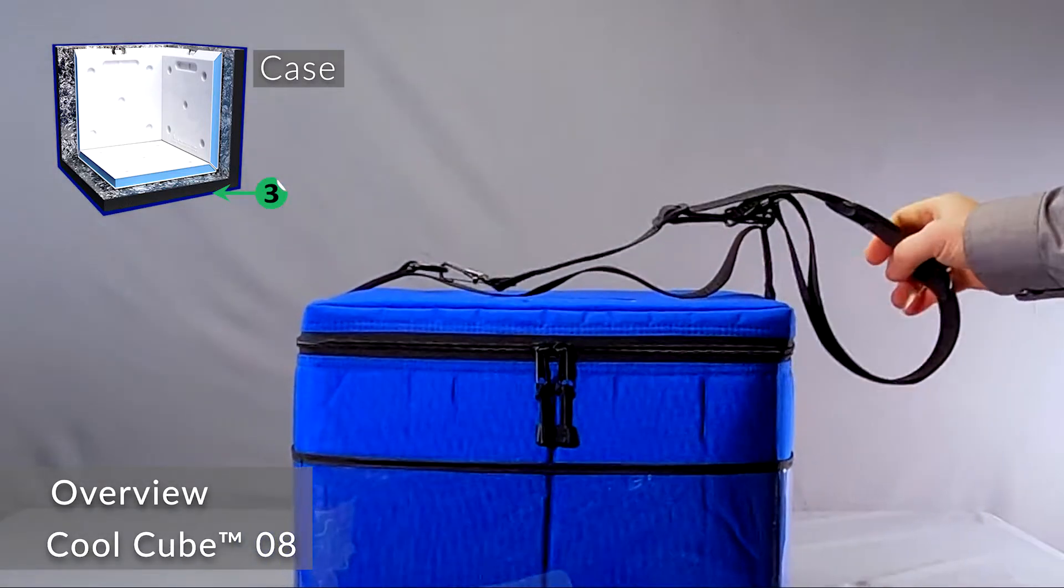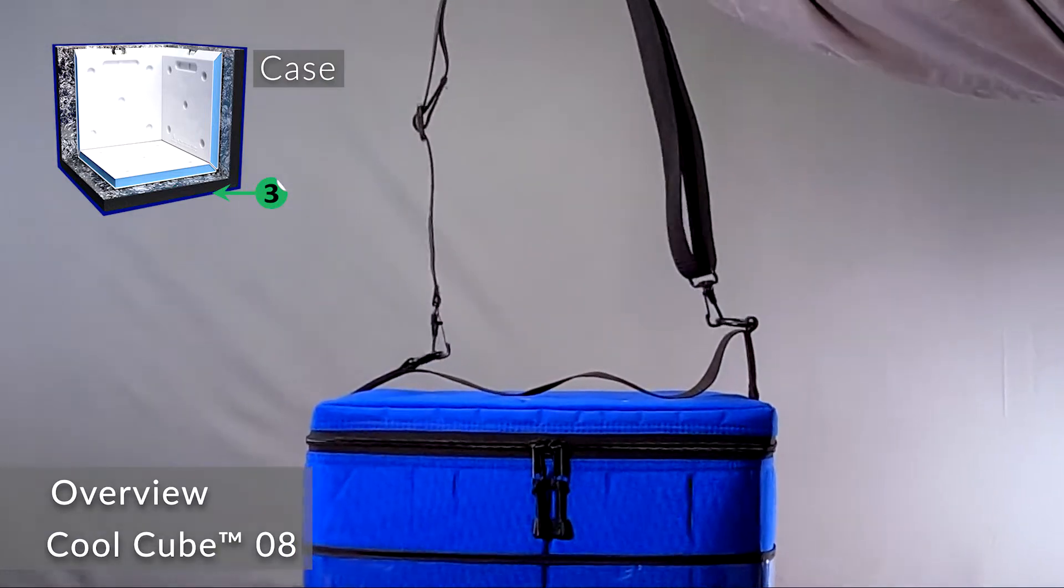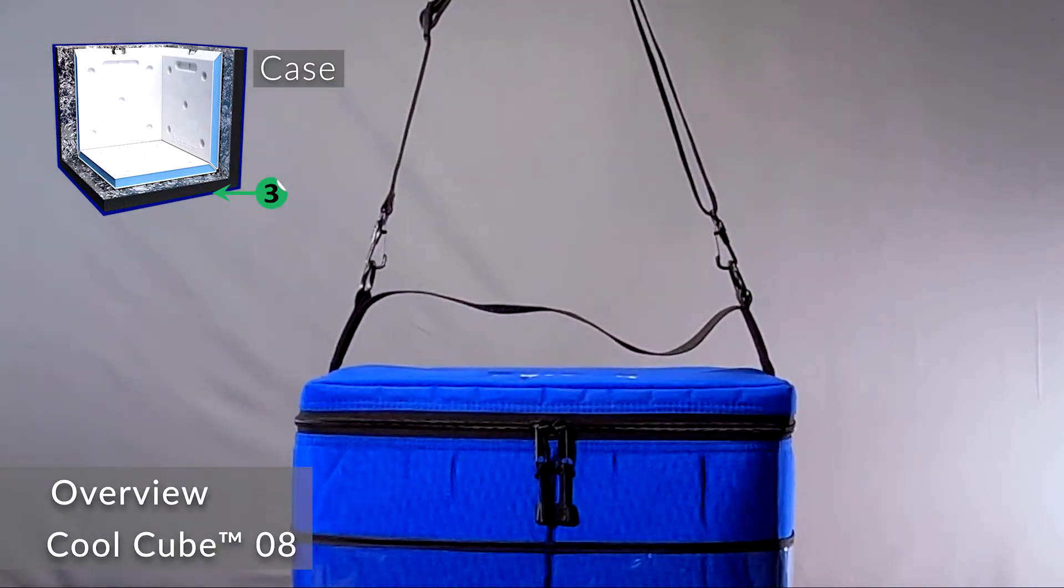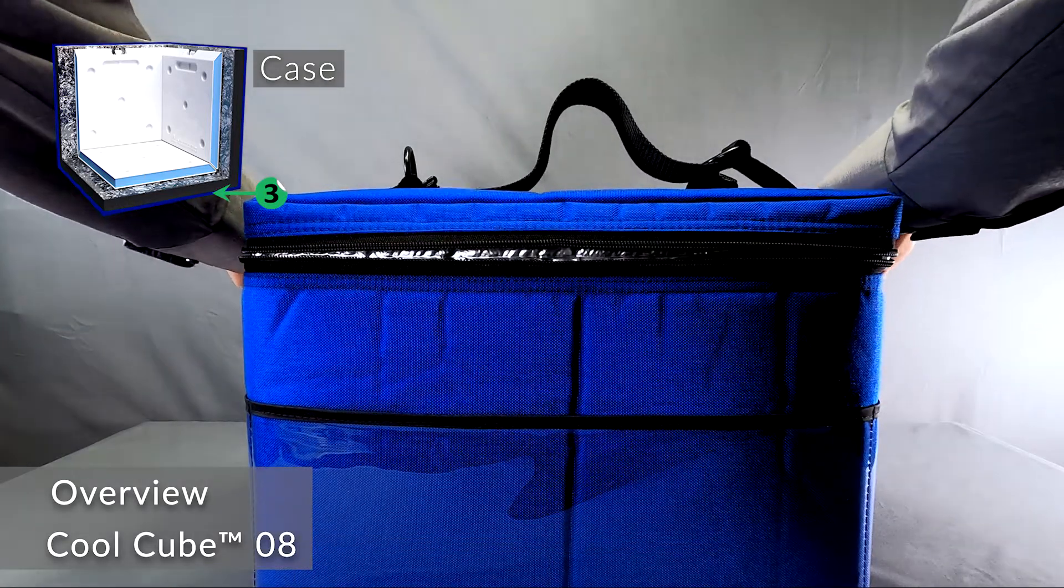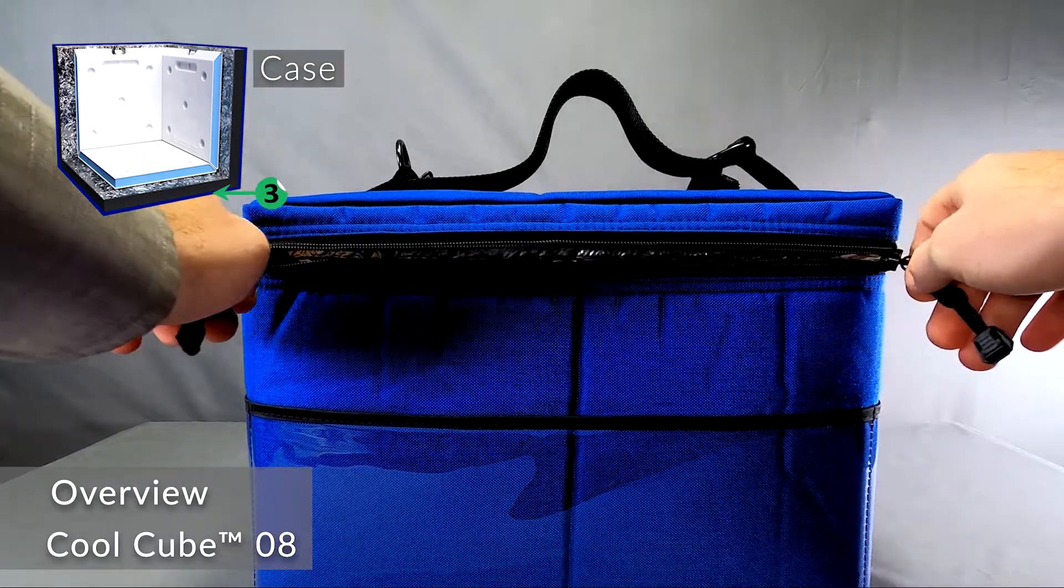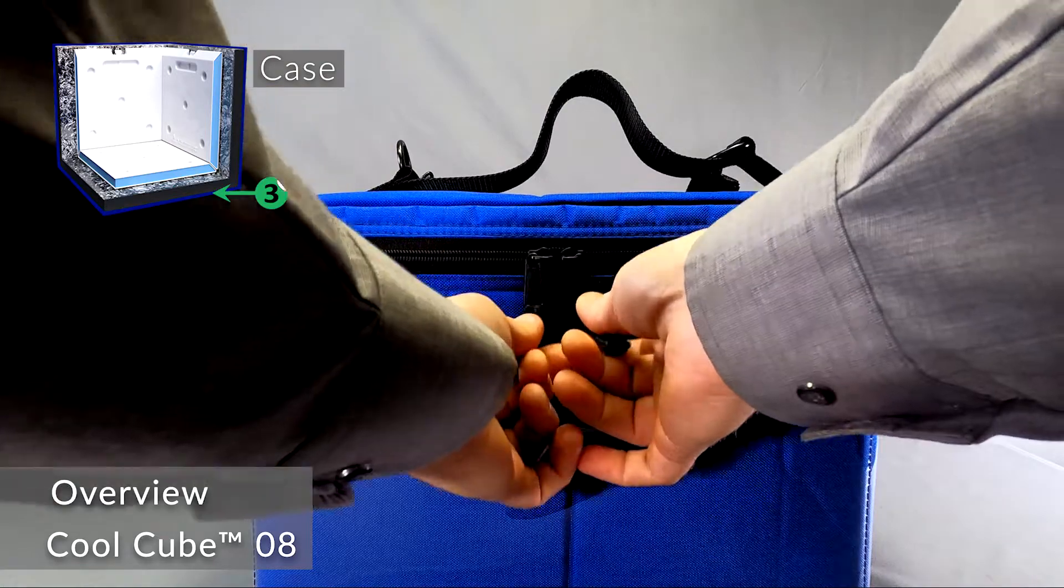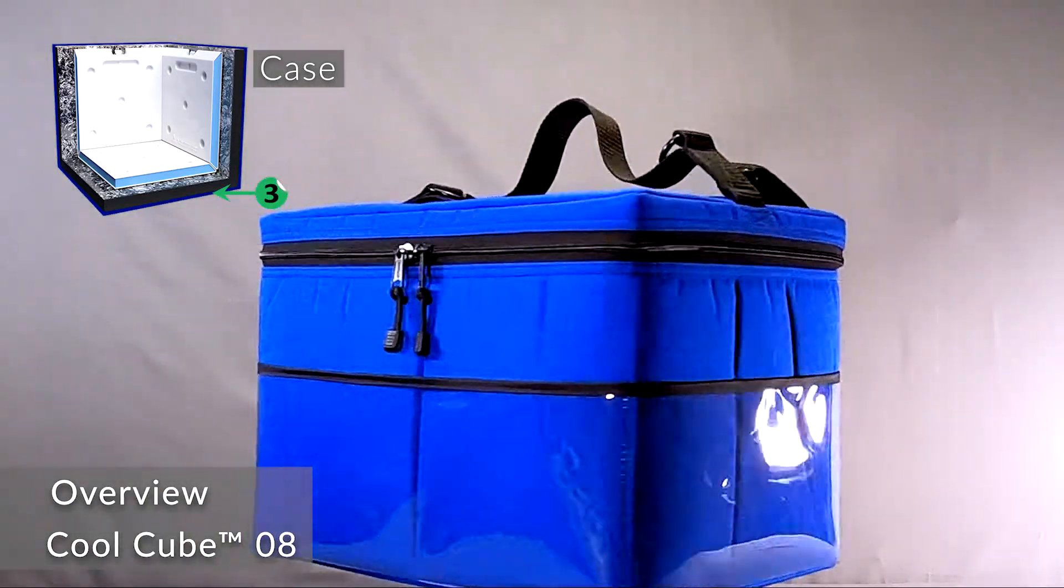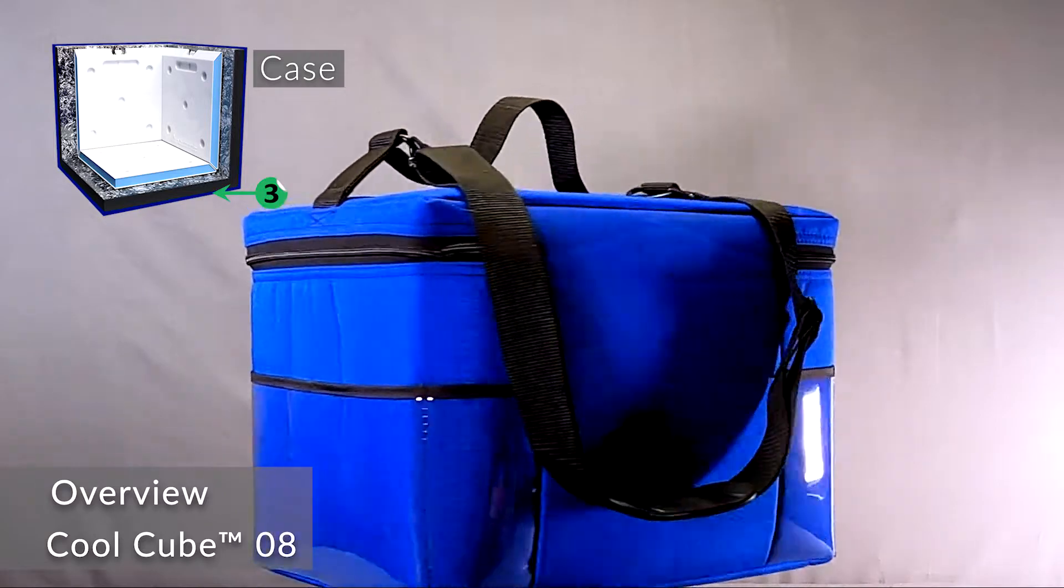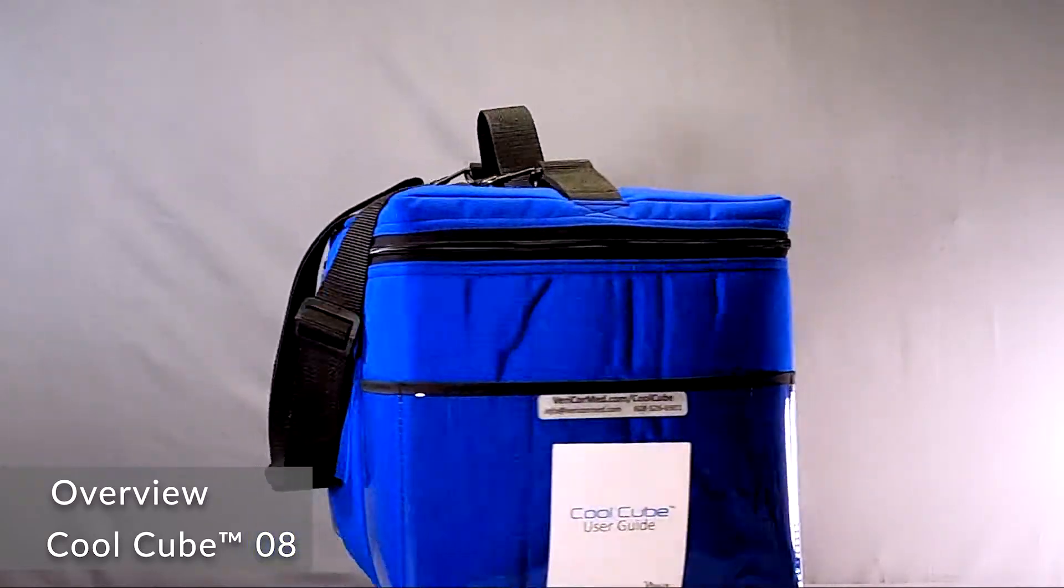Even when fully loaded, the integrated shoulder and hand straps allow the user to pick up the CoolCube and go. The dual zippered lid closes securely so the product can't fall out, and the integrated clear plastic external pockets are great for holding temperature monitors, paperwork, and pens while on the go.